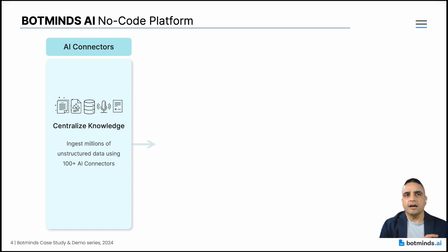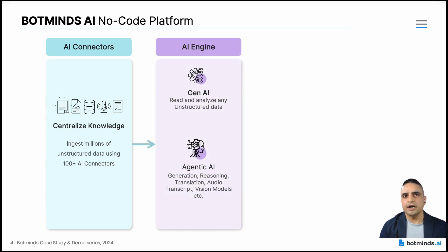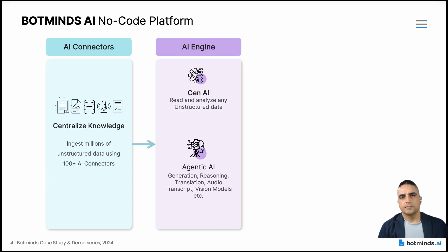Then we have the AI engine. Our AI engine offers both generative and agentic AI capabilities. Through Gen AI, we read and analyze all kinds of unstructured data, independent of template. With agentic AI, we bring in reasoning and autonomous process execution.